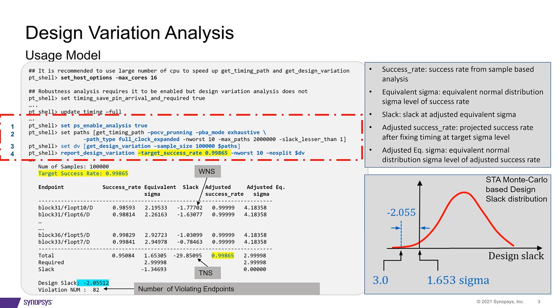Second, we create a collection of timing paths that result in loss of success rate. Using additional options, we can prune the paths that do not contribute to the success rate loss and helps improve the runtime. Third, we use the getDesignVariation command to perform the DVA-based Monte Carlo statistical analysis with a given collection of paths and generate a variation object. Finally, we use reportDesignVariation command on the variation object to generate a DVA report.